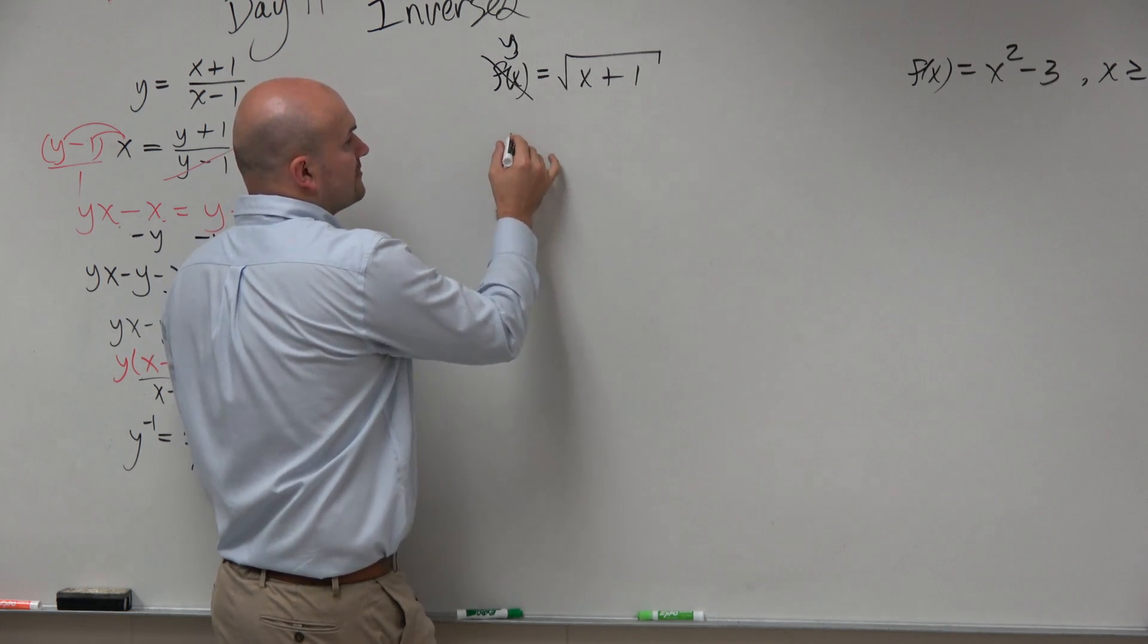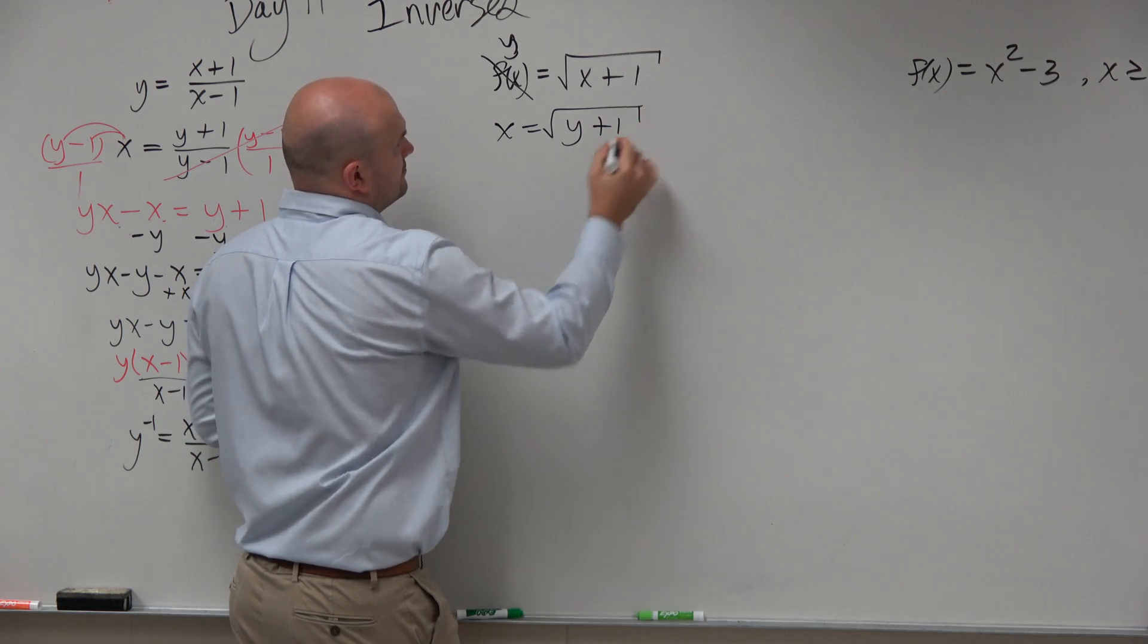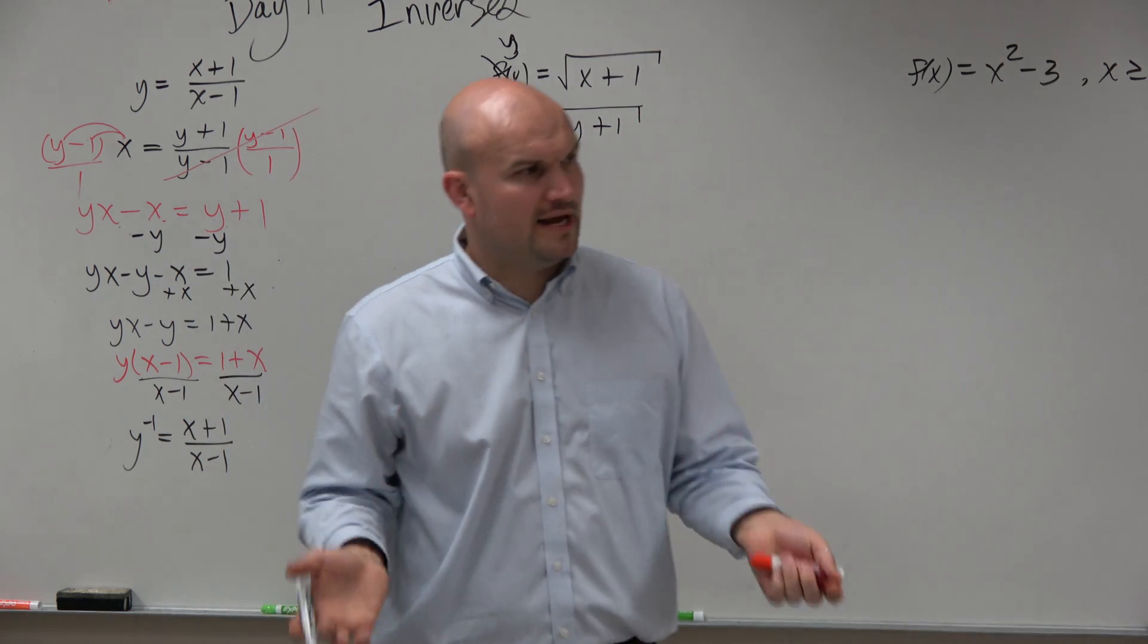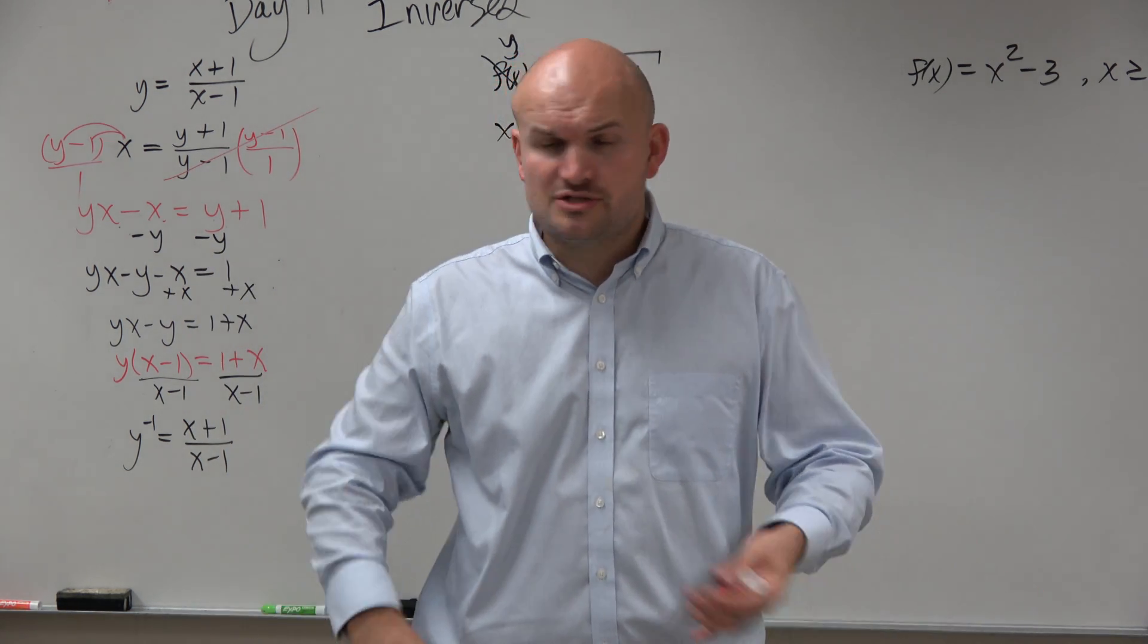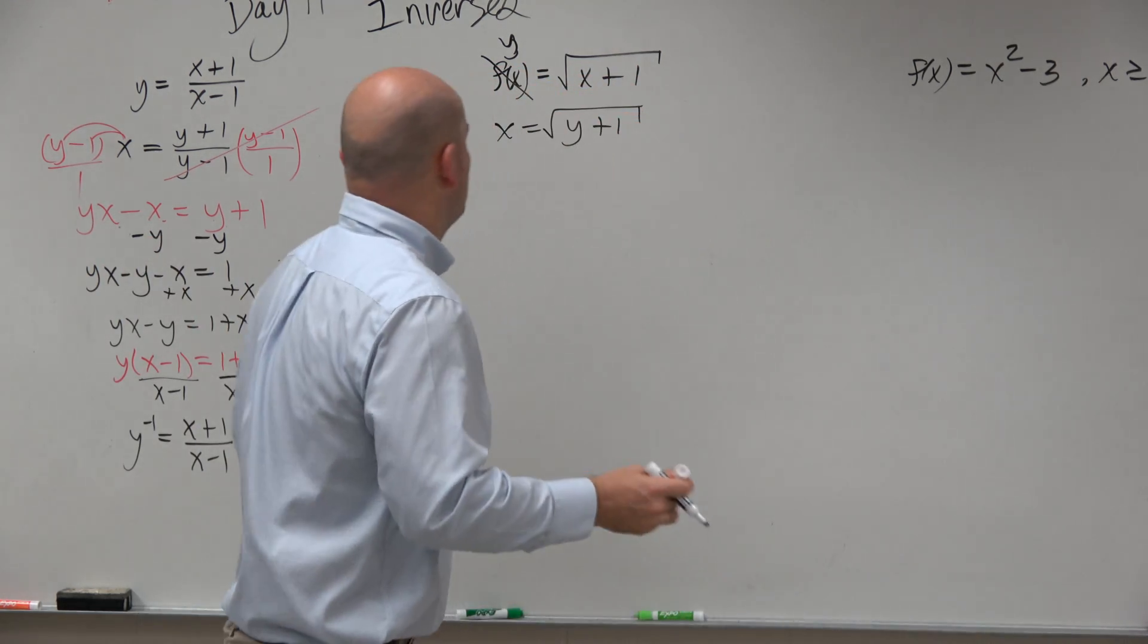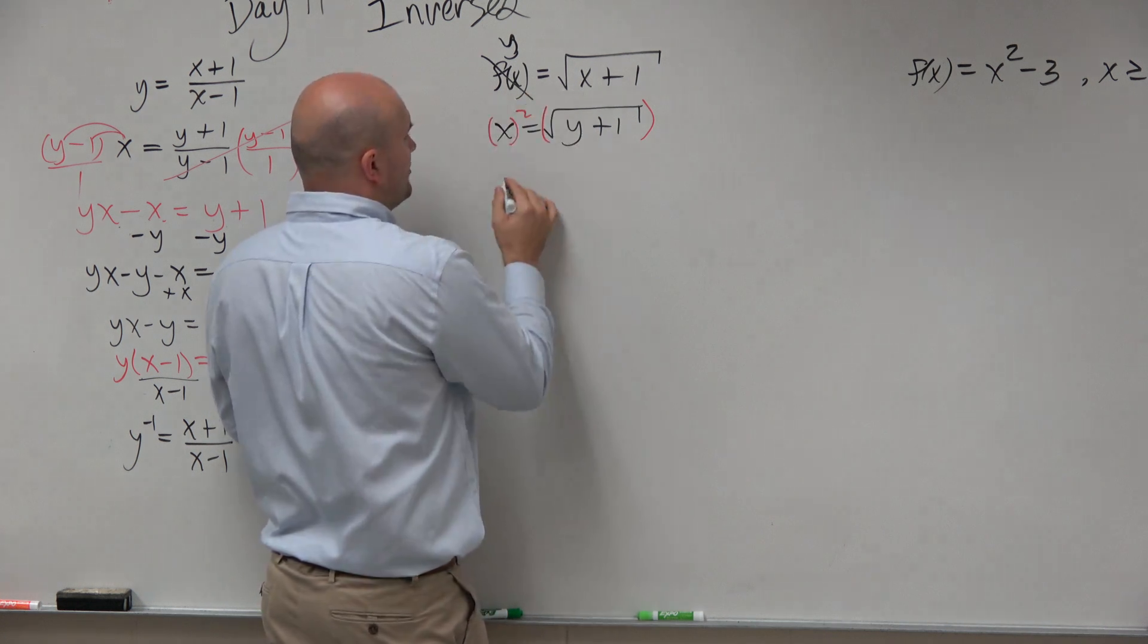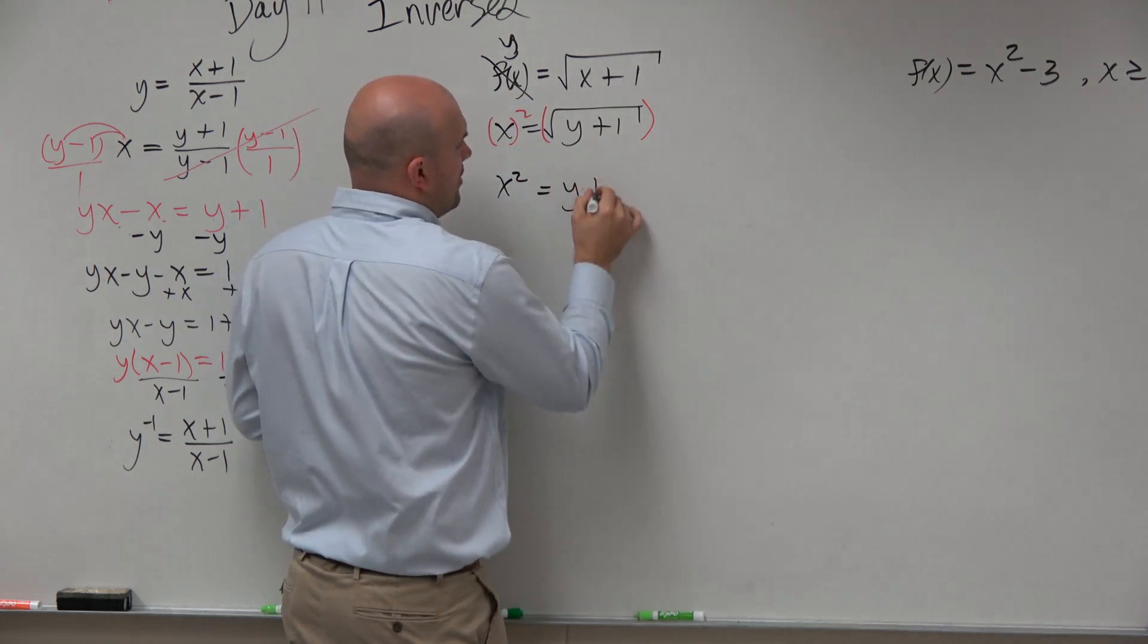Let's swap the variables. x equals the square root of y plus 1. Now, again, we've got to use our inverse operations. So if we want to undo the square root, we need to square. So we'll square both sides. Now we're left with x squared equals y plus 1.